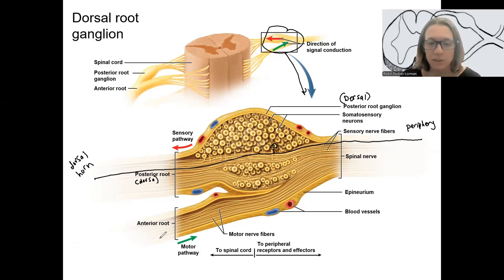The bottom half here, this is just showing the anterior root, also called the ventral root. Motor information coming out. And those axons are traveling past the dorsal root combined with the dorsal root to form the spinal nerve. The spinal nerve contains both motor and sensory information.